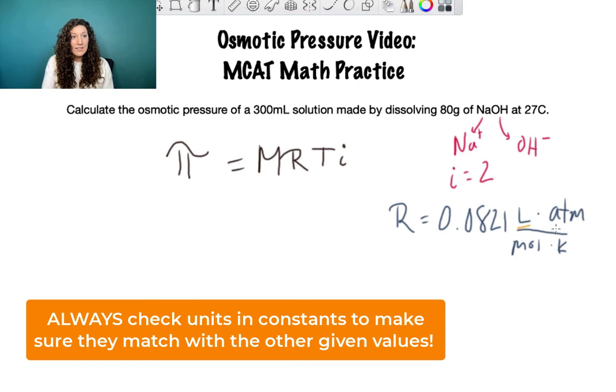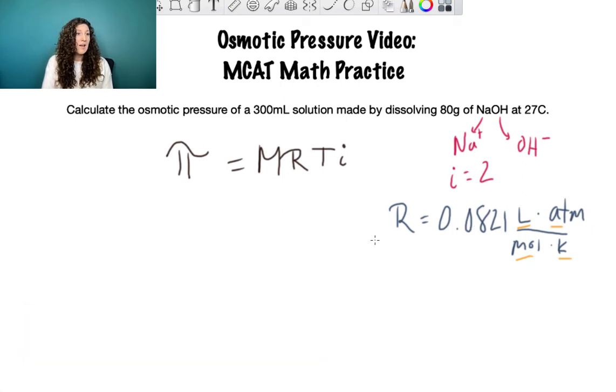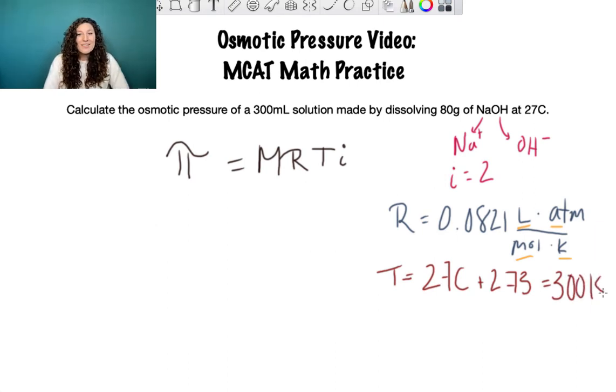So we need liters, atmospheres, moles, and Kelvin. This presents a challenge because our temperature T is not in Kelvin, it's in Celsius. How do we convert Celsius to Kelvin? You just add 273 to whatever the Celsius value is. So 27 plus 273 equals 300. Our temperature is 300 Kelvin. 300 Kelvin to 27 degrees Celsius is a good one to memorize, it's a common temperature for practice problems.